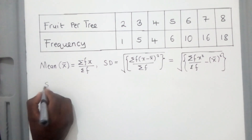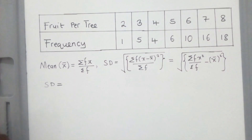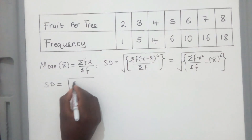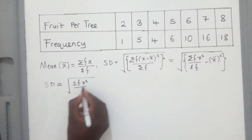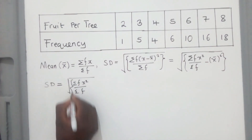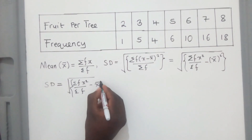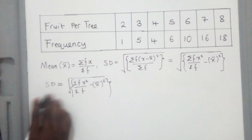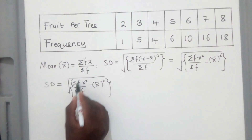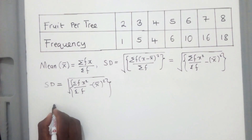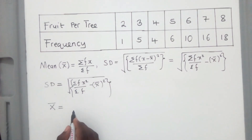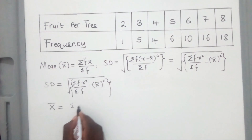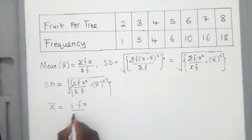SD, which is standard deviation, is equal to the square root of (Σfx² / Σf) minus x-bar squared. Now let's find this. We start with the mean x-bar — so how do I find the mean?